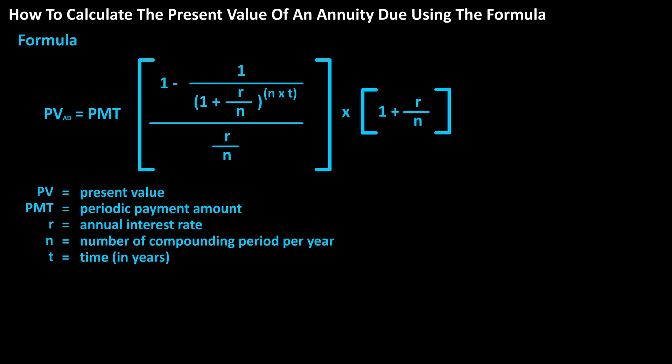The formula to calculate the present value of an annuity due is present value equals the payment amount times the quantity 1 minus 1 divided by 1 plus the annual rate divided by the number of compounding periods raised to the number of compounding periods times the number of years, divided by the annual rate divided by the number of compounding periods, times the quantity 1 plus the annual rate divided by the number of compounding periods.